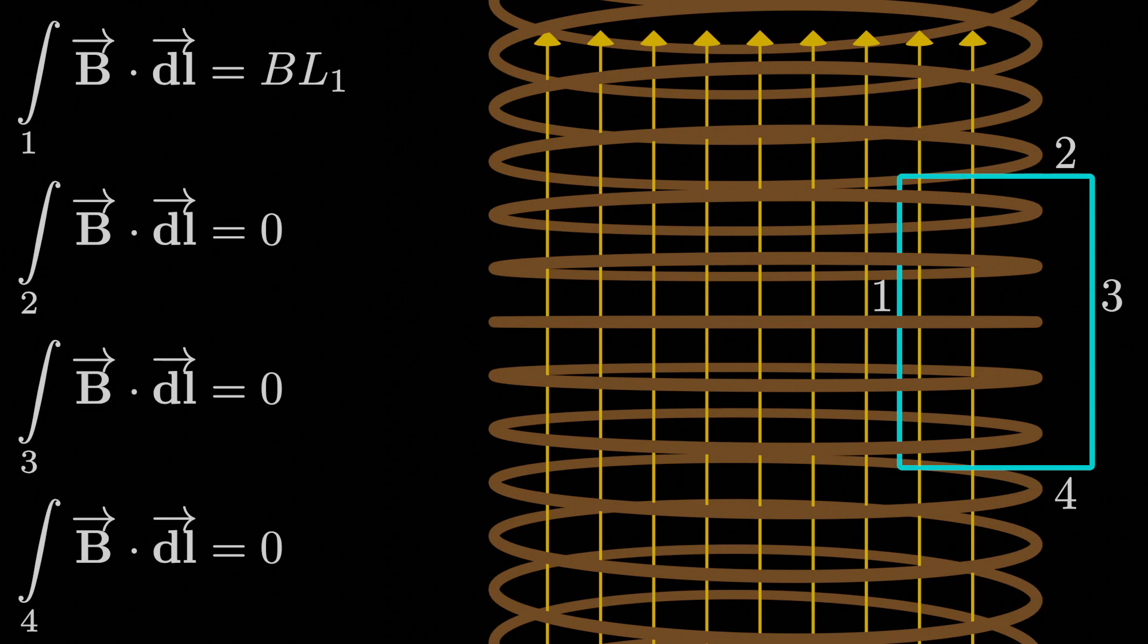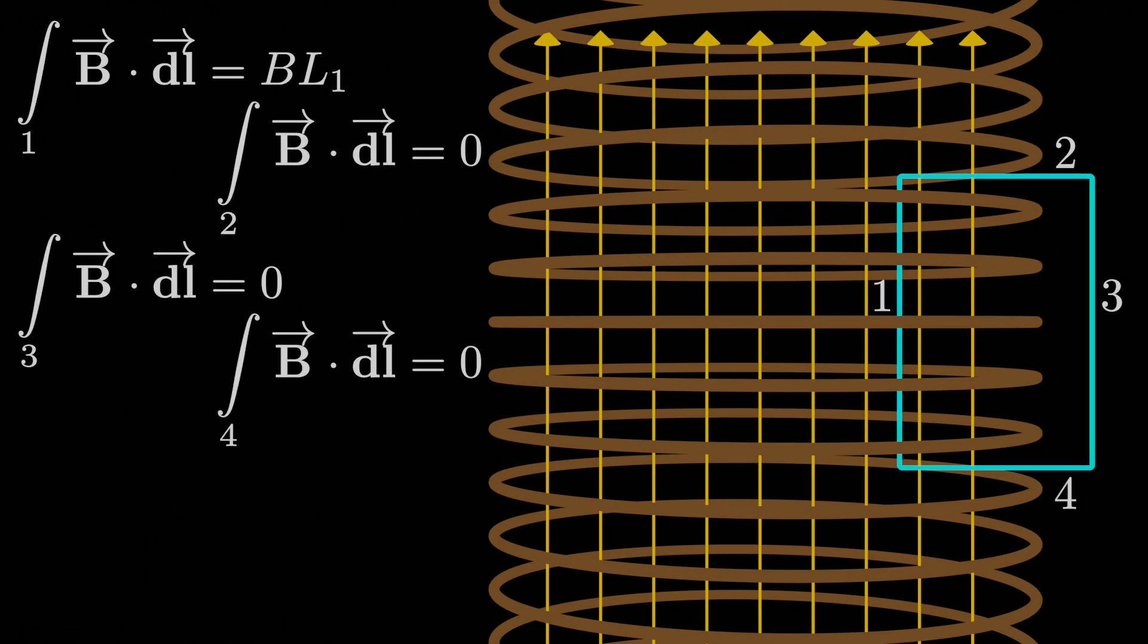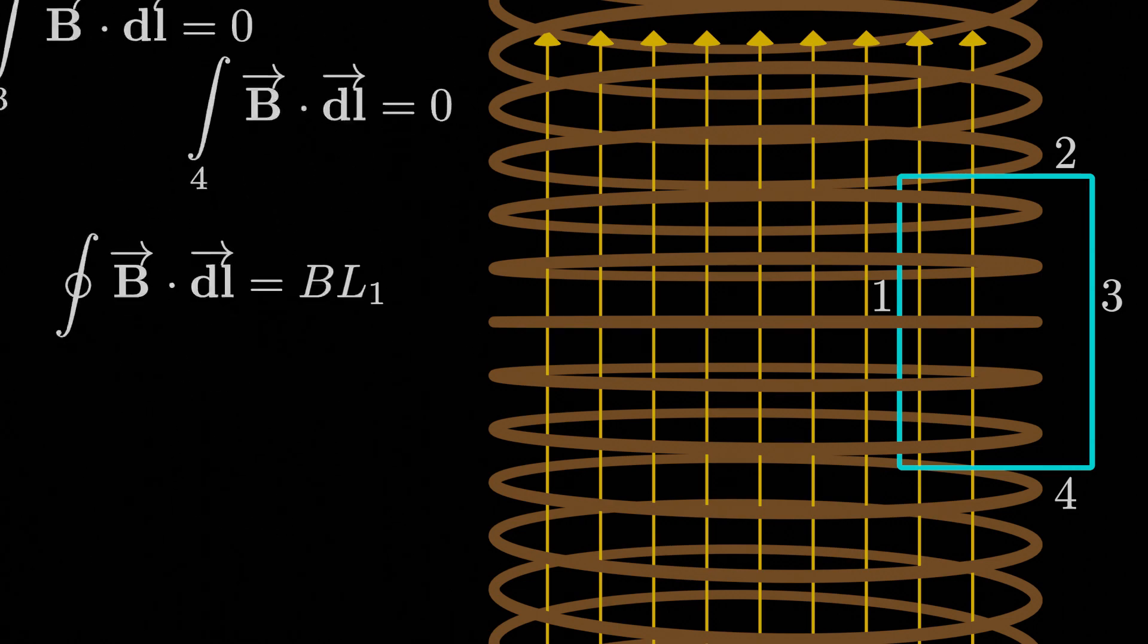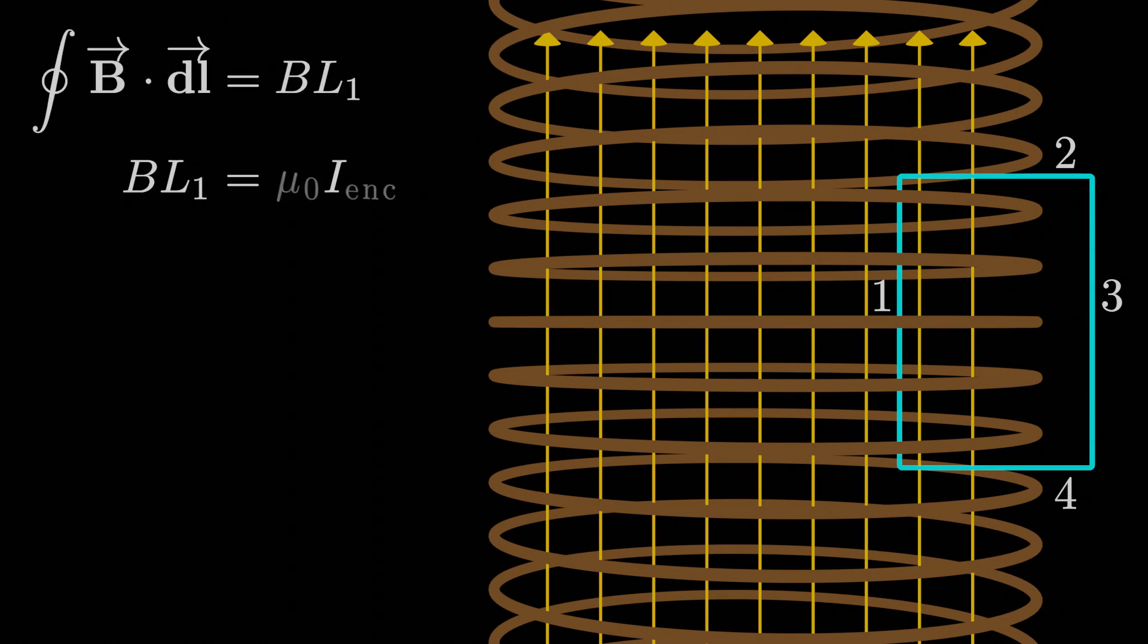So along the entire closed loop, we only have a non-zero B dot dℓ along the first segment, and that's equal to B times L₁, the length of that first segment. We remember that the closed loop integral of B dot dℓ is just the integral along each segment added up, so we can add up all these segment integrals together, and we just end up with B times L₁. And by Ampere's law, we can set that equal to μ₀ times the current enclosed by the rectangular loop we constructed.